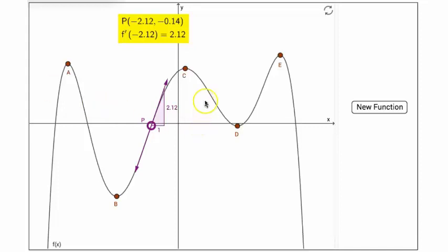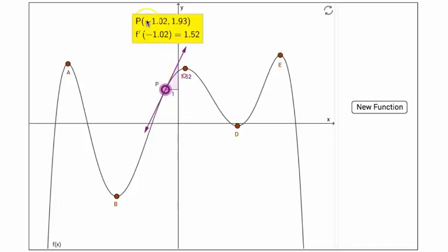So on the graph of the function f of x, there is a movable point P. As I drag point P along the graph of the function, at the top of the window are the coordinates of point P, and the value of the derivative evaluated at the x-coordinate of point P.